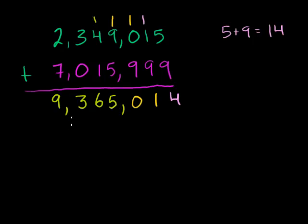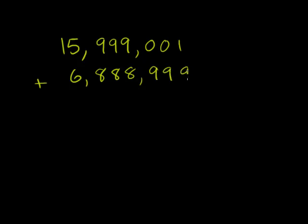So hopefully this gives you a pretty good sense. Let me just do one more, just to really make sure that we really understand how all of this carrying business works. So let's do 15,999,001 plus 6,888,999. Let's just see how this one's going to turn out. This seems like a difficult problem. But once again, if we just focus and don't get lost, we're going to get the right answer, hopefully. So 1 plus 9 is 10.